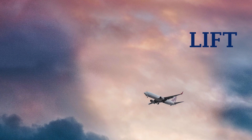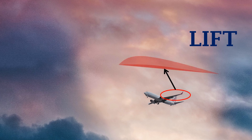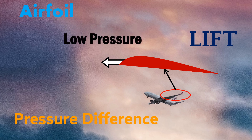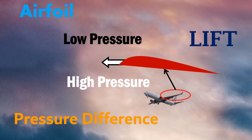First, let's see how lift is created on the wings when an aircraft is flying straight and level. To understand this, we need to take a closer look at the cross-sectional shape of the wing, which is the airfoil. Lift is created because of a pressure difference between the top and the bottom surface of the airfoil. As the airfoil or the aircraft moves forward, low pressure is created on the top surface and high pressure is created at the bottom surface. This creates the required pressure difference for the lift force.